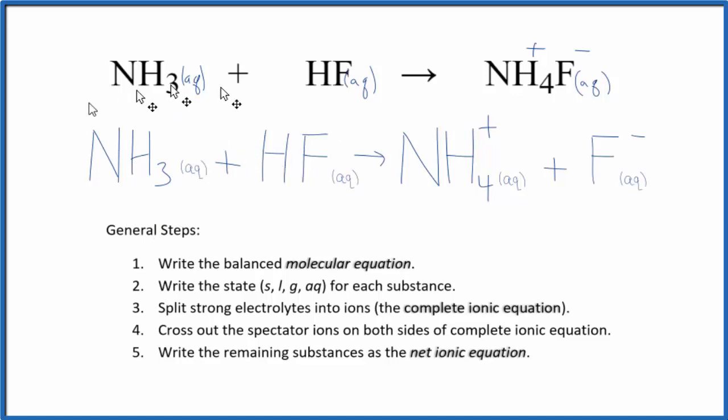You'll note that charge is conserved. We don't have any charges on this side that we see, but we have a positive and a negative. They cancel out. So the charge is conserved. And if you count the atoms up, they'll be the same on each side. So it's a balanced equation. Mass is conserved as well.